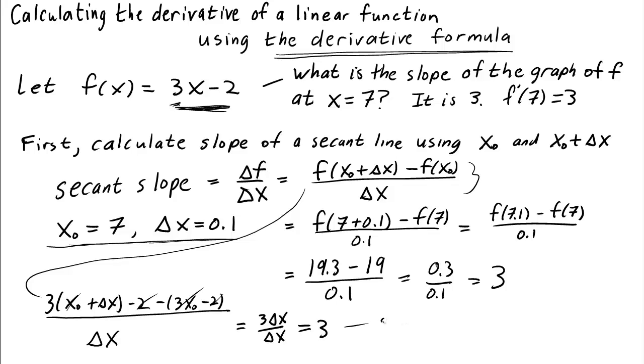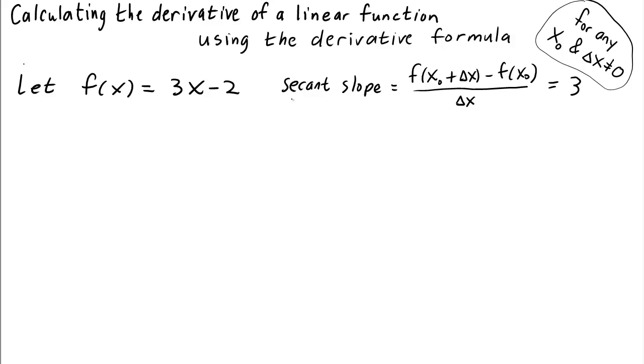So the conclusion is the slope of any secant line is 3. Again, that's not surprising. We knew that ahead of time. But the point is that this formula gives us this 3 like it should.